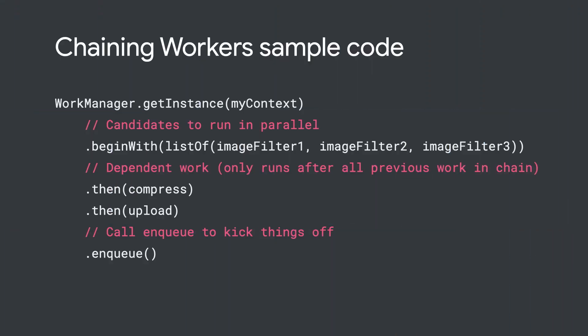Now let's see how this translates into code. Your code will look something like this once you create the workers and work requests with the desired constraints. To start queuing your workers, get an instance of WorkManager. Call the beginWith function, passing in the image filter workers as a list so they will be executed in parallel. Next, for each worker, call the then function and pass in the worker that needs to run sequentially. Finally, make a call to enqueue to schedule your tasks.